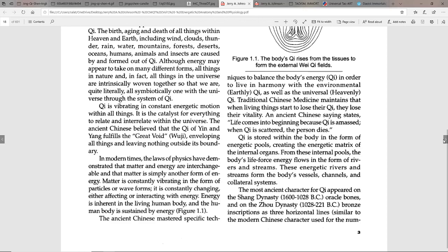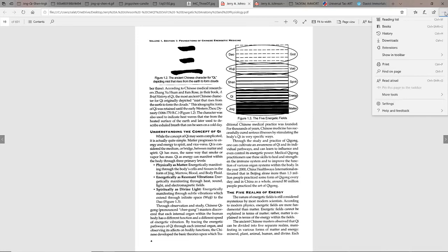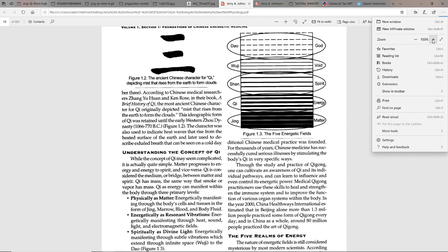As we look over here, understanding this, we have what we would call basically three dantians. These dantians are those energetic reservoirs of energy - places where the energy pools in different vibratory rates.